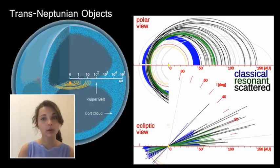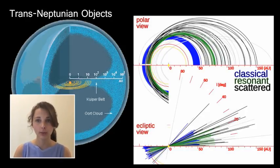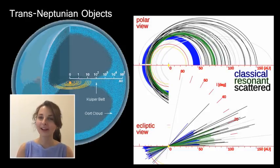A trans-Neptunian object, or TNO, is a minor planet in the solar system that orbits the Sun with a larger semi-major axis than Neptune, or 30 Astronomical Units. Extreme trans-Neptunian objects, or ETNOs, are those that have a semi-major axis greater than 150 Astronomical Units and a perihelion of greater than 30 Astronomical Units. The most massive known trans-Neptunian object is Eris, followed by Pluto, and 2007 OR-10, Makemake, and Haumea.